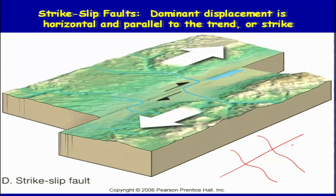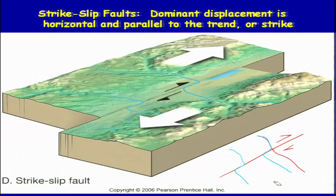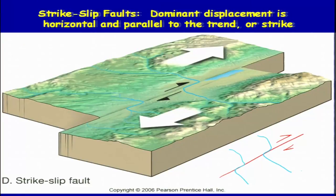For example, if this movement has taken place in this direction, then what you will see is the streams which were coming straight will get deflected. The present configuration of the stream will be along the fault. This is one very commonly seen or observed feature which you will try to identify when doing photo interpretation to mark the active fault which has strike-slip motion. There are a few more features we will talk about later, but this is the most common.